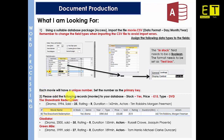Once you have completed that, move on to Task 2: add the following records to your database. Stock is going to be yes, the price is £15, the type is DVD, and the name is Shawshank Redemption. It's a drama from 1994 — one of the best movies out there — 25 sold, rating R, duration 142 minutes, actors Tim Robbins and Morgan Freeman. You also need to add Gladiator and Green Mile.